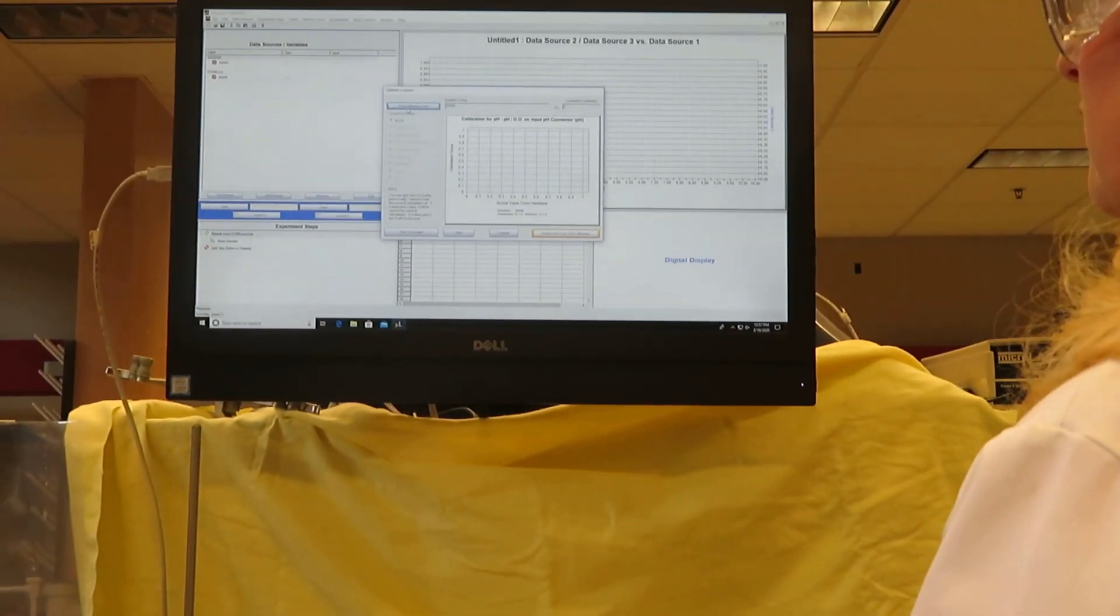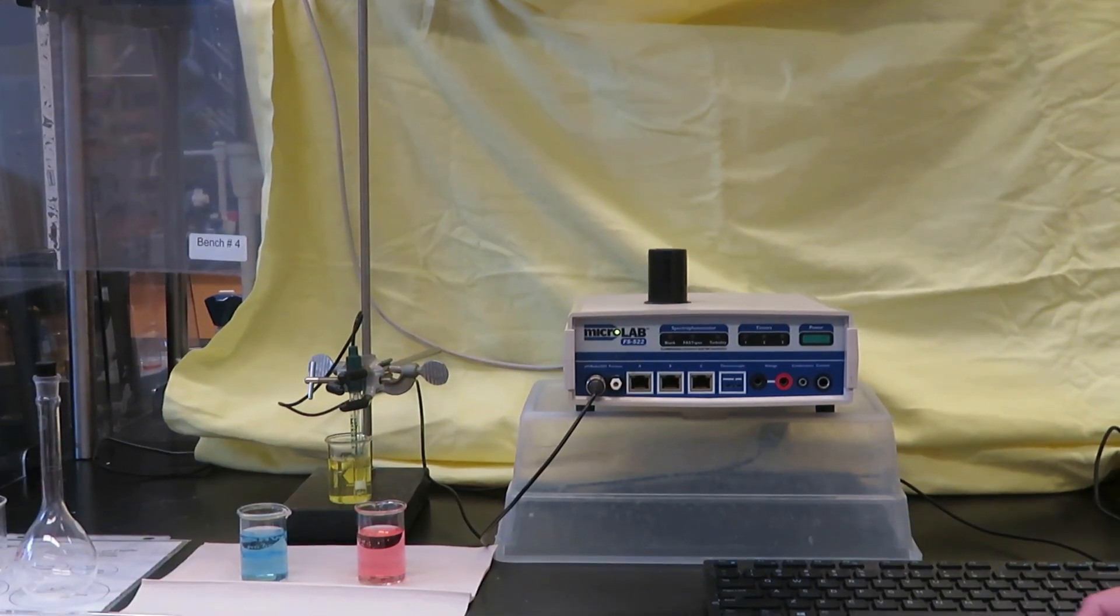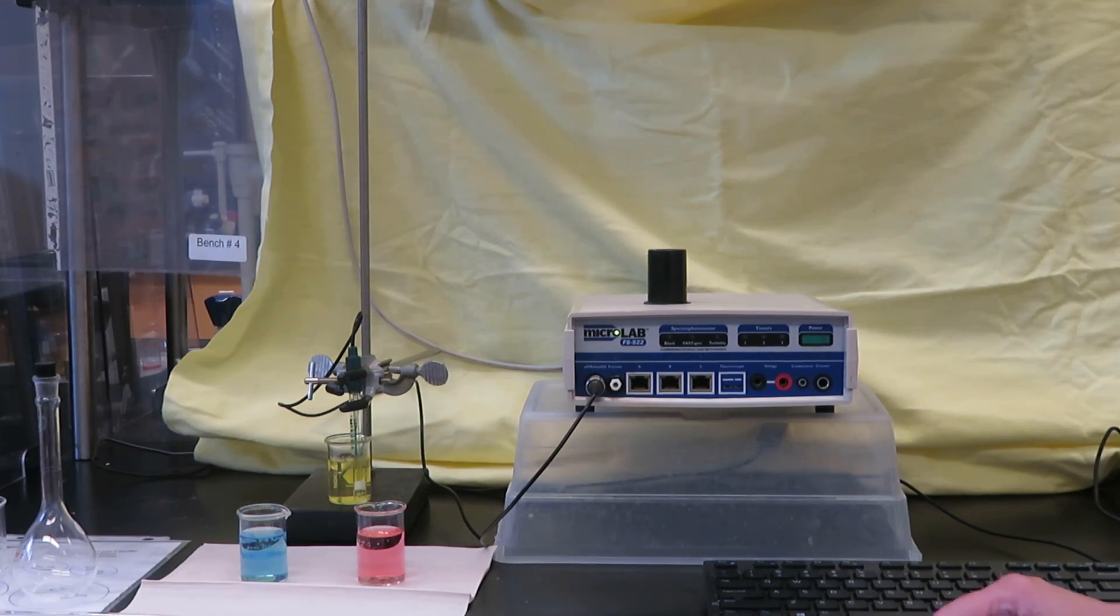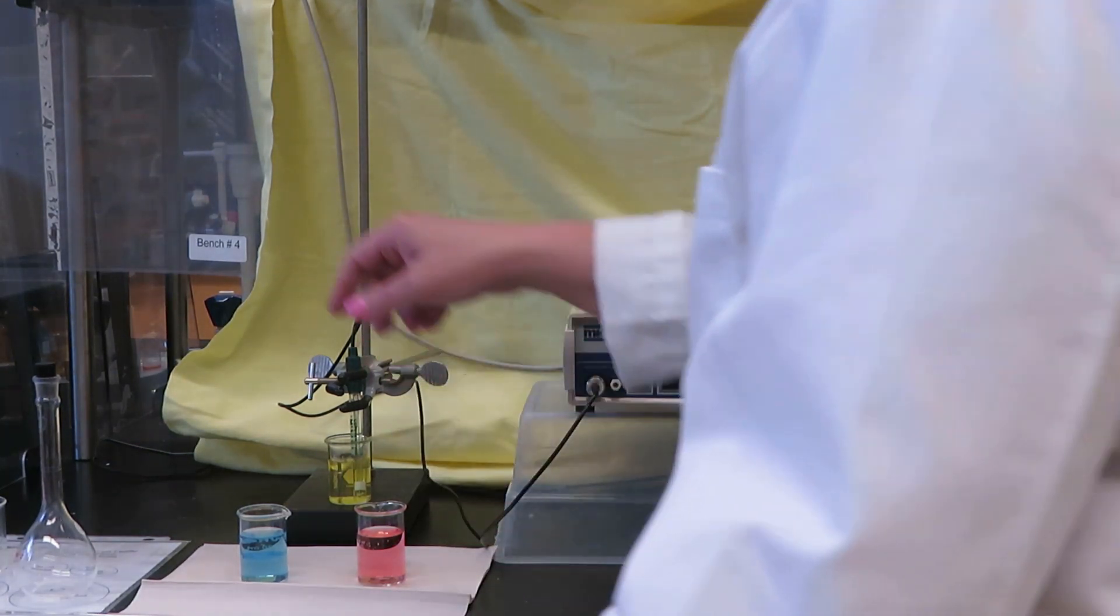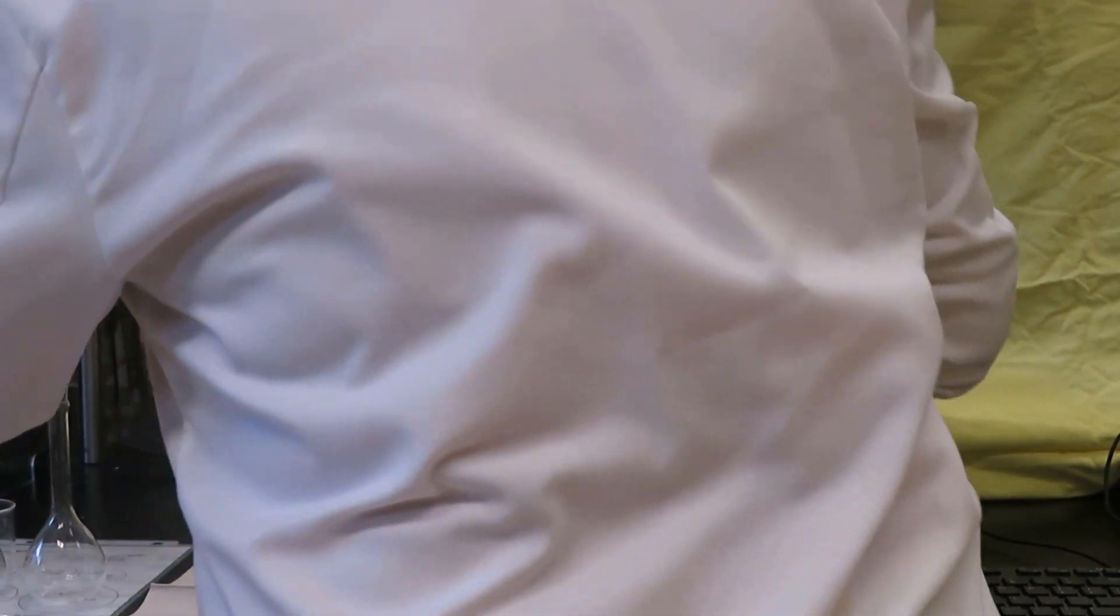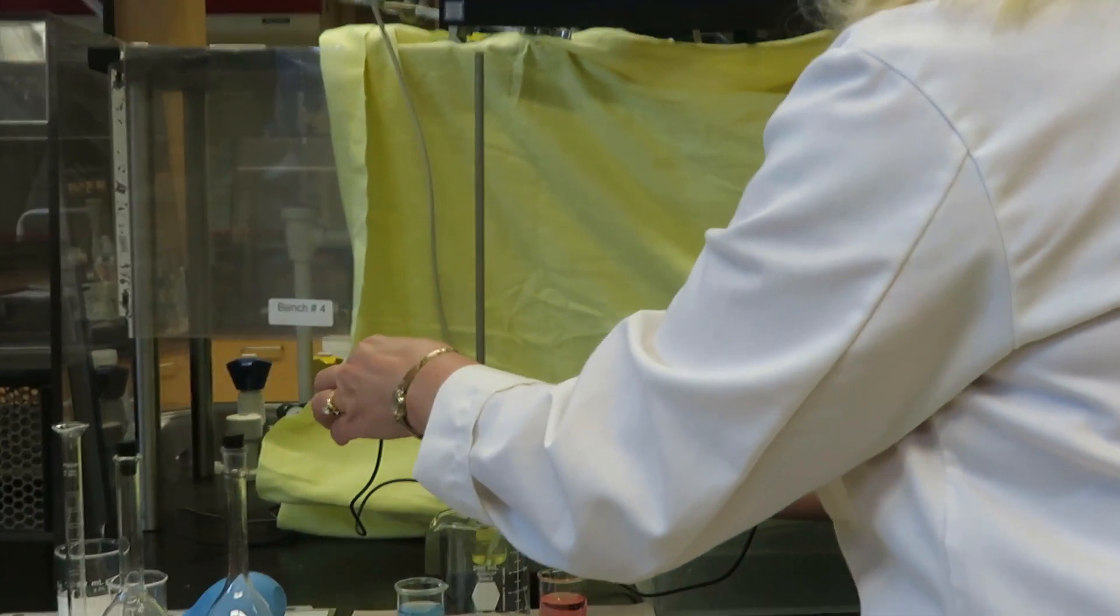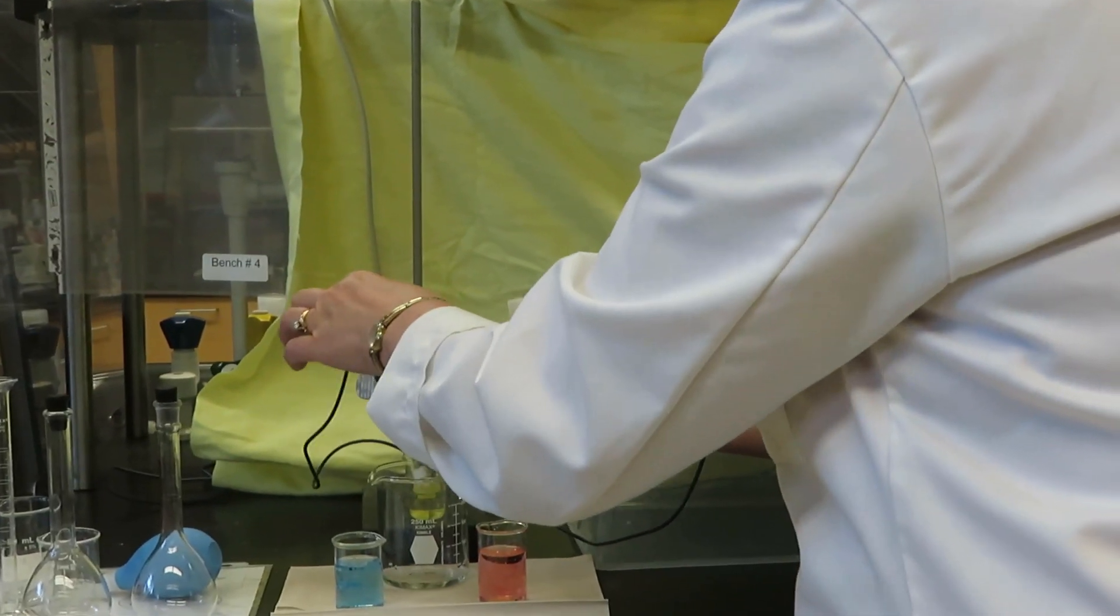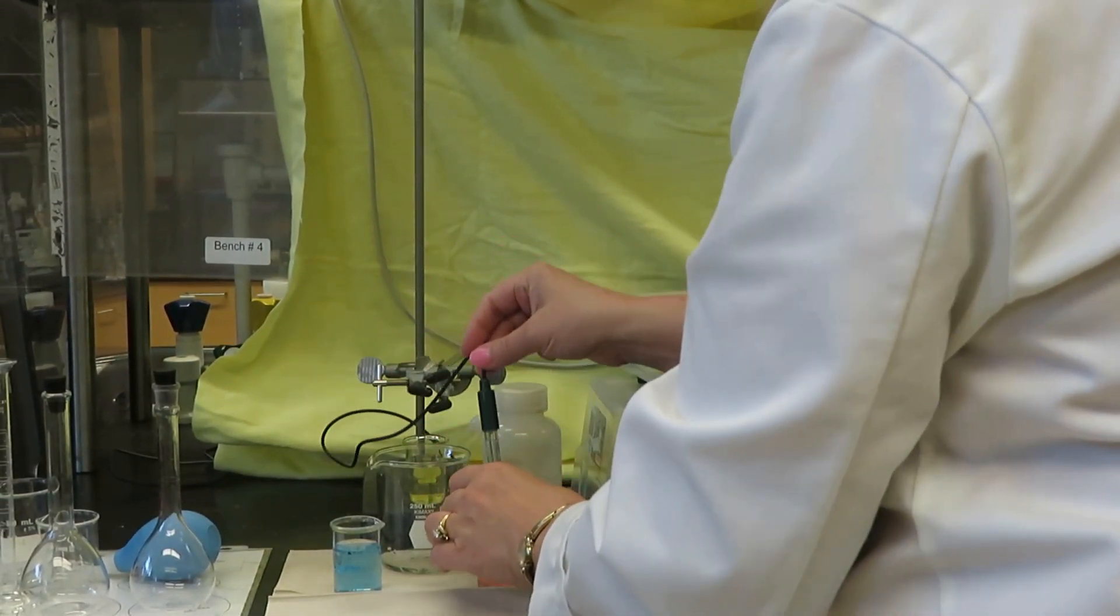First we will add a calibration point. We're going to start with pH 4 buffer, which is this red solution right here. I'll take my DI water and waste container - it's always good technique to rinse off the probe between solutions. Let me take the probe out of the pH 7 buffer, give it a shake, and now put it in the pH 4 buffer.